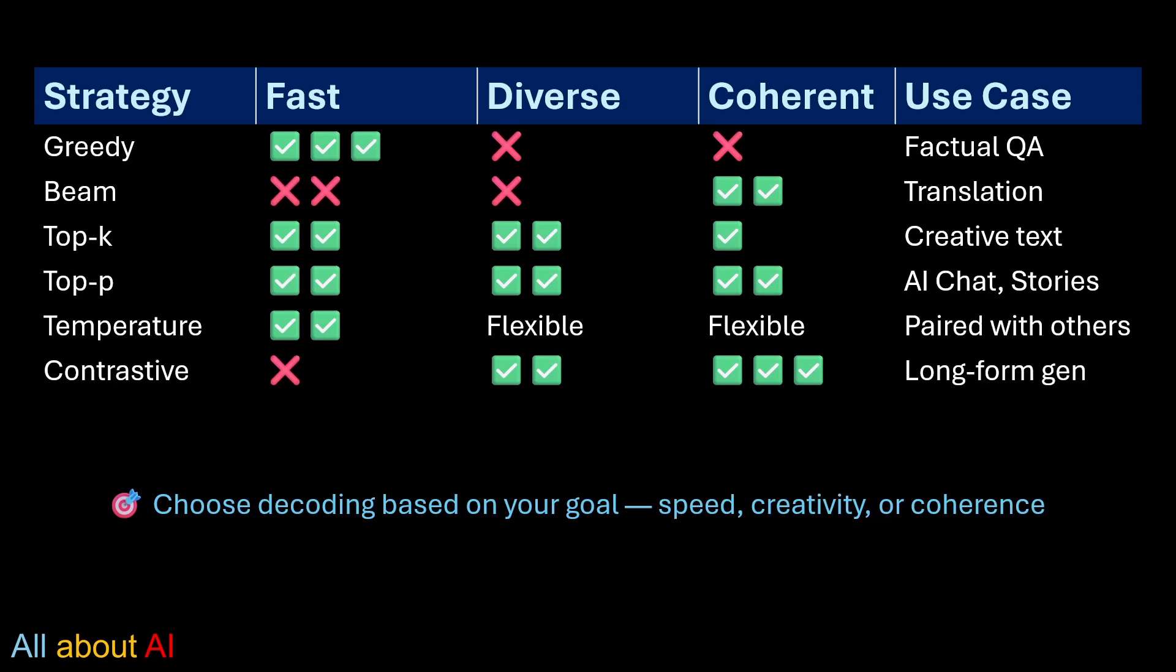So what we have learned? There are no one-size-fits-all. Need fast, factual replies, go greedy. Want a fluent translation? Maybe beam search is a better choice. Craving for creativity, top P with temperature is your friend. And for rich, long-form writing, contrastive is where it's at. Decoding is the art behind the output and mastering it unlocks the full power of LLMs. So choose your decoding strategy based on your goal, speed, creativity or coherence.